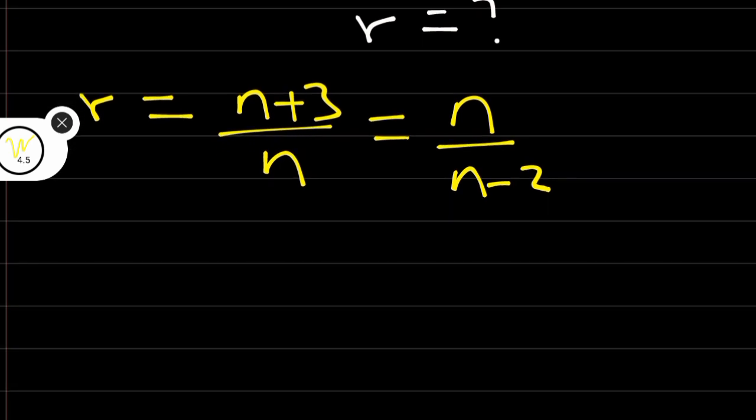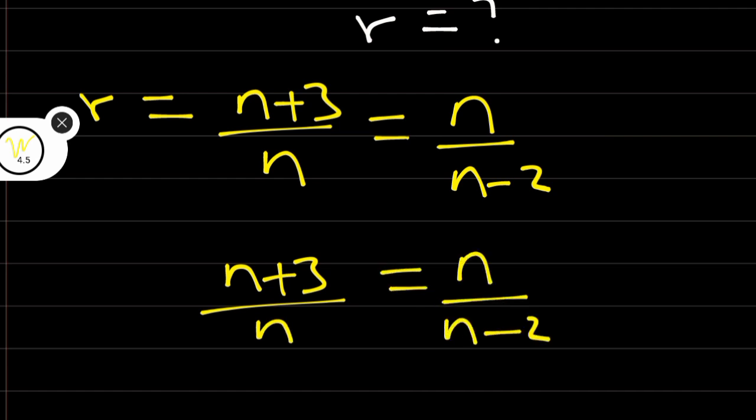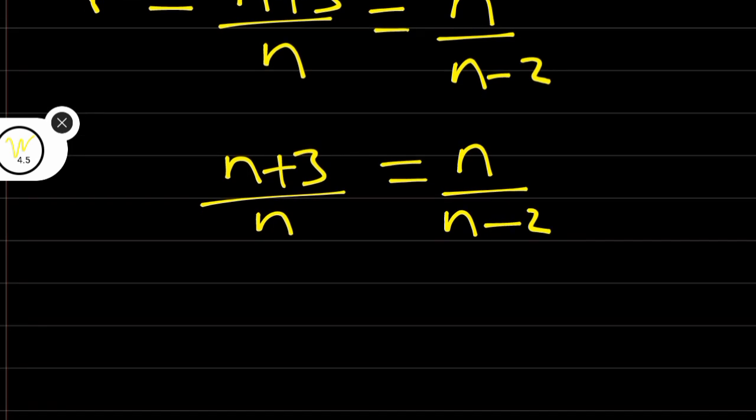In that case, it means n plus 3 over n is equal to n over n minus 2. We can cross multiply.